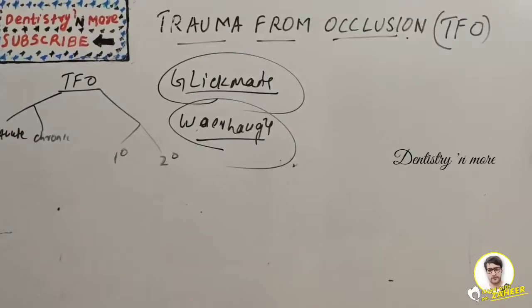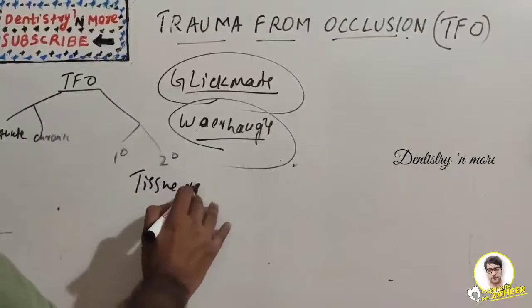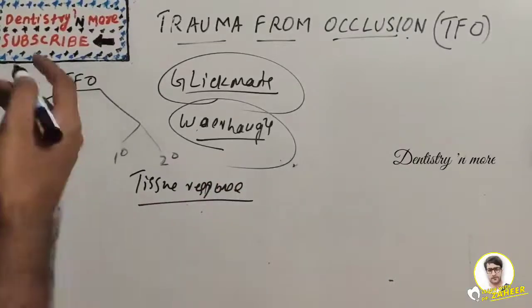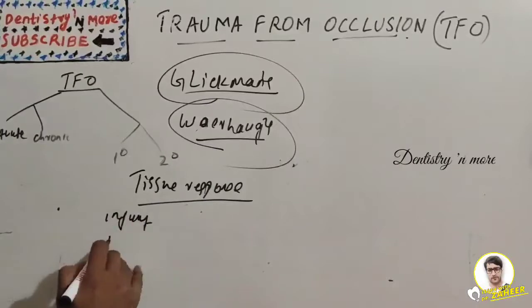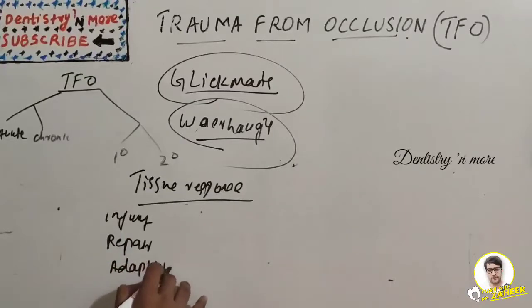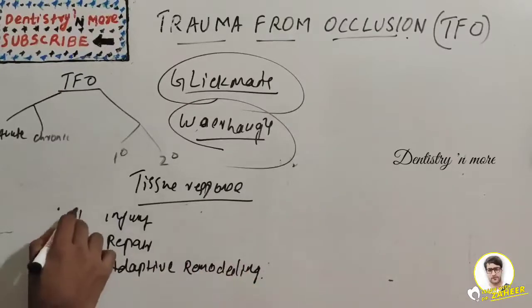There are three stages of tissue response to increased occlusal force: Stage 1 is injury, Stage 2 is repair, and Stage 3 is adaptive remodeling.